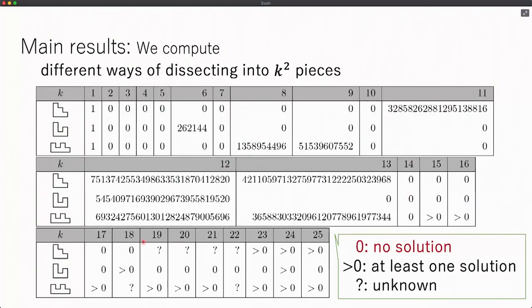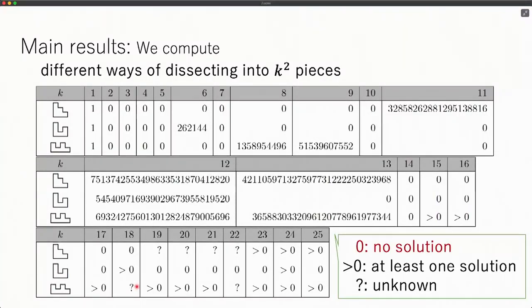When you have big numbers, you may see greater than zero, which means we have some solutions, but we cannot enumerate or check all possible patterns. The question mark means we have no idea whether they may have rep-tiles or not.